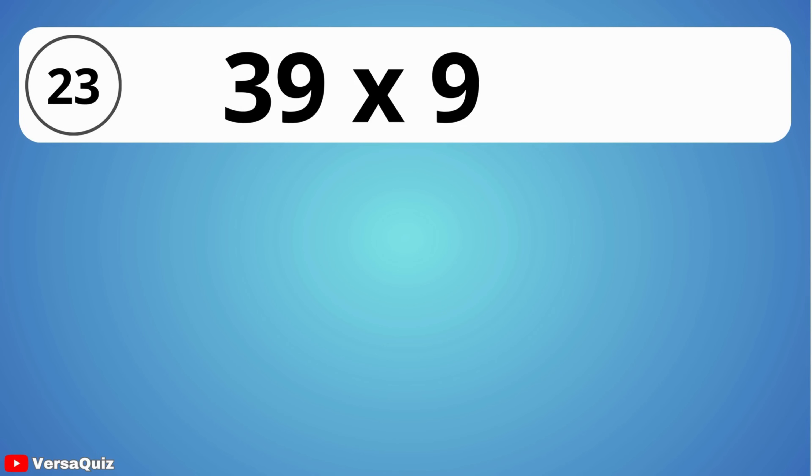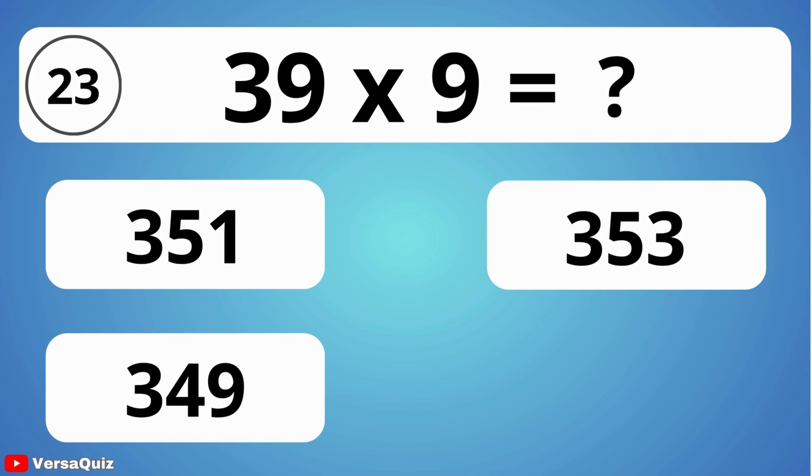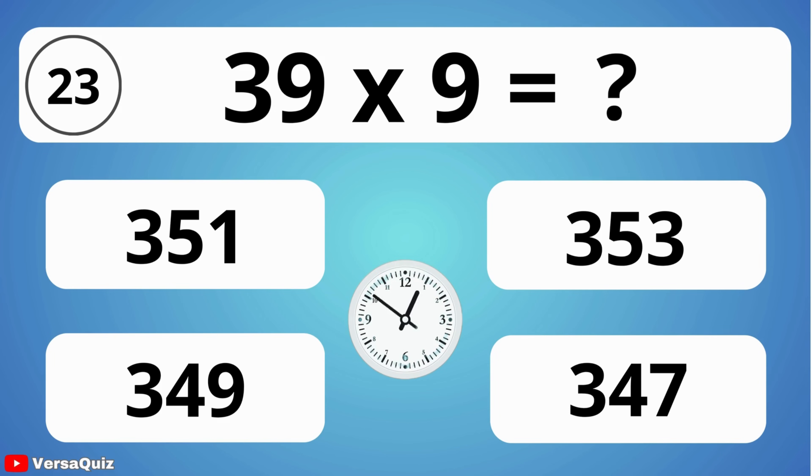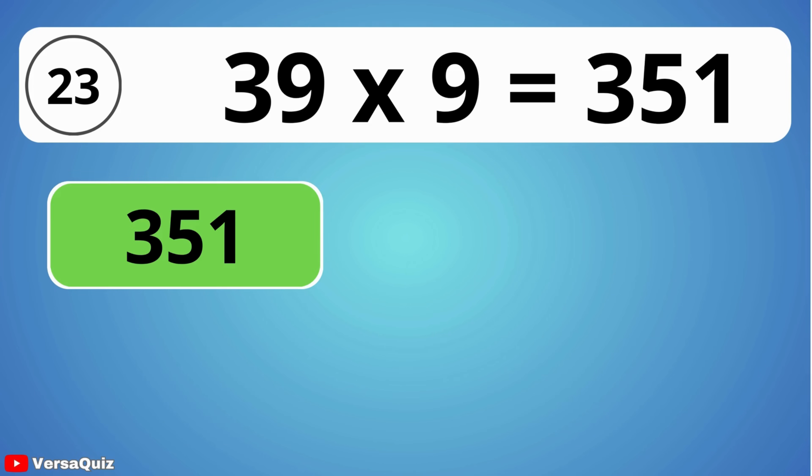What is 39 times 9? Your task is to decide on the correct option within the next 7 seconds. 39 times 9 is equal to 351.